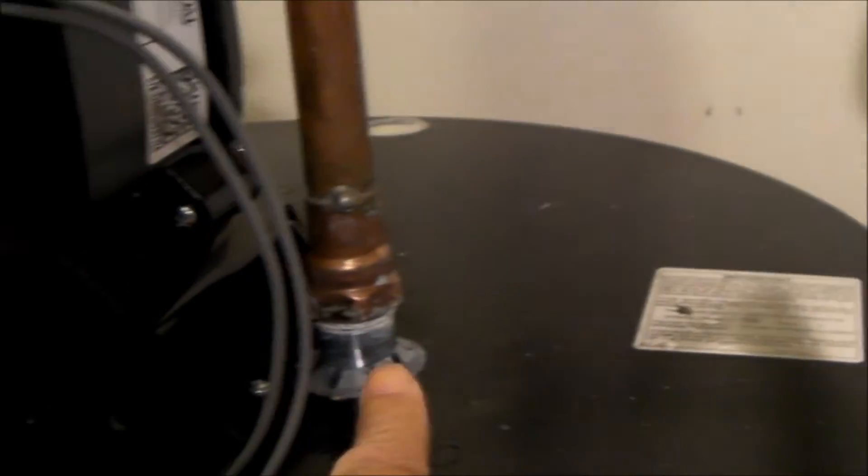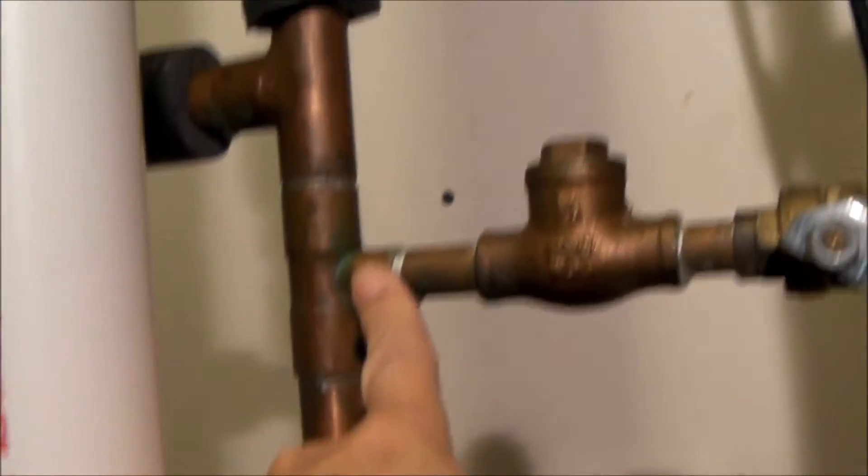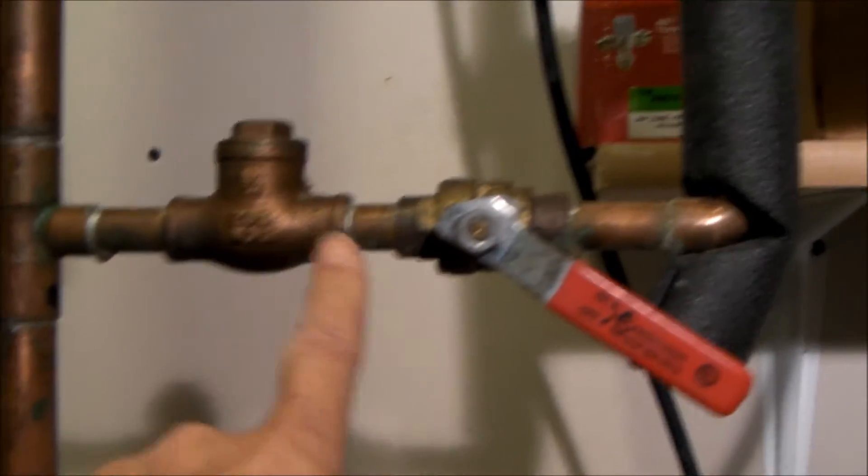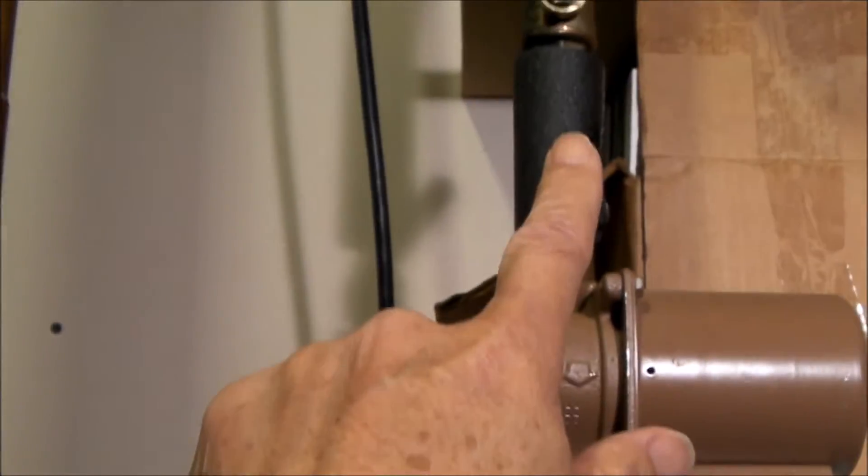So the cold water main comes down, it goes into the hot water tank. It could also go off this T, but this check valve is here to keep that cold water from circulating back into this hot water return.